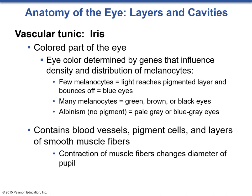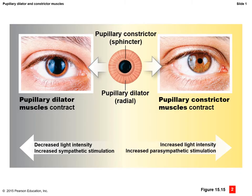The iris also contains blood vessels, pigment cells, and layers of smooth muscle fibers. The contraction of these muscle fibers changes the diameter of the pupil. We have two major smooth muscles inside the iris: the pupillary constrictor muscle and the pupillary dilator muscle. The pupillary dilator muscle dilates the eye and makes the pupil larger, occurring with decreased light intensity or increased sympathetic stimulation — when we need to let more light in. The constrictor works with increased light intensity or increased parasympathetic stimulation, when we want less light in the eye.